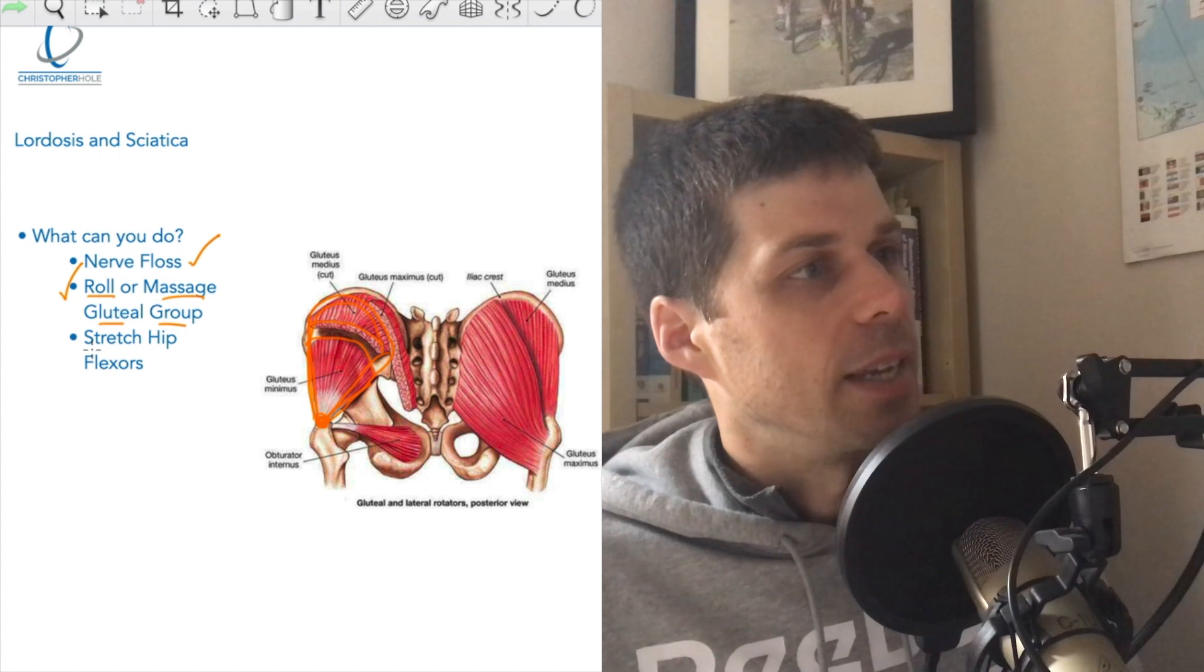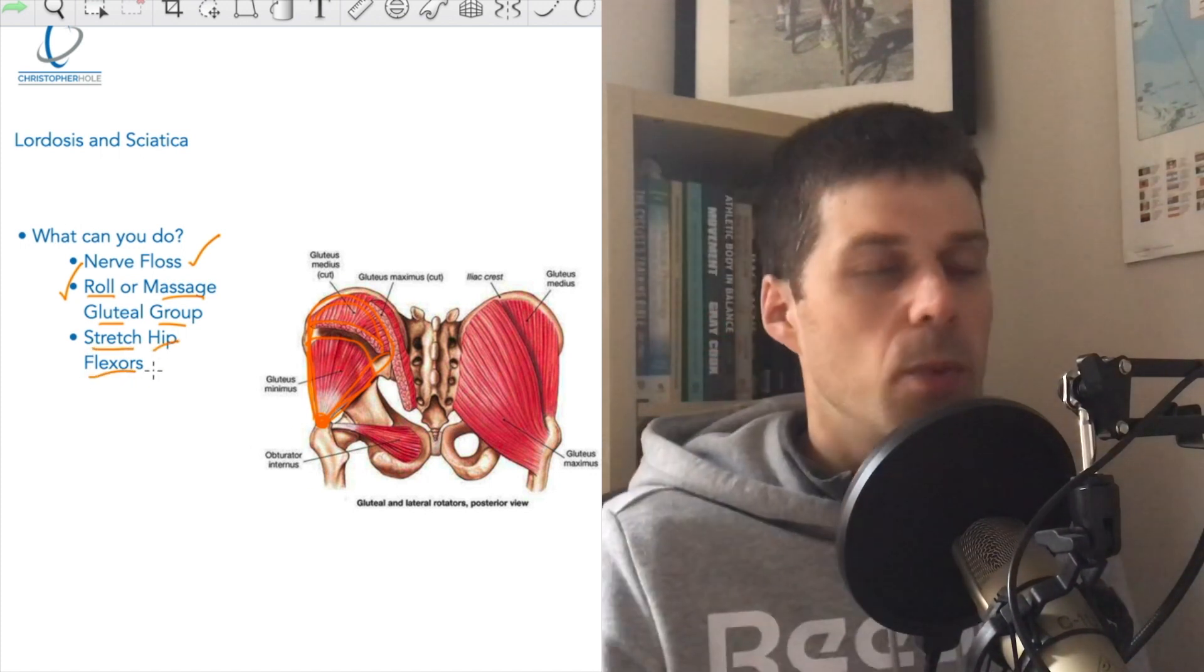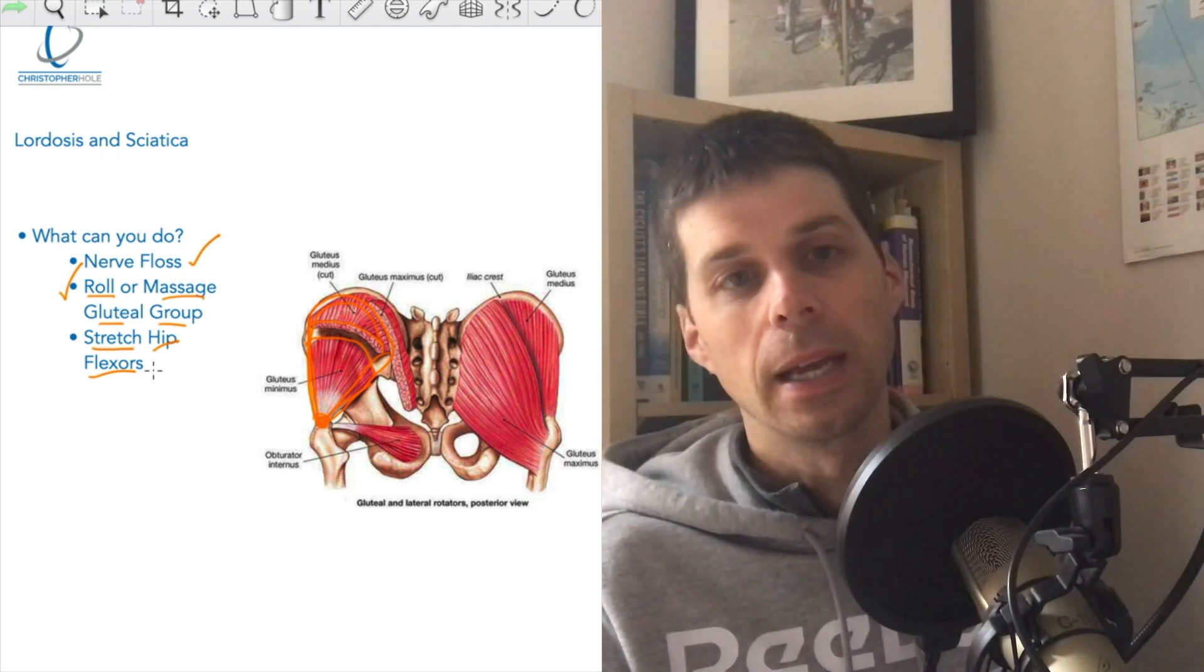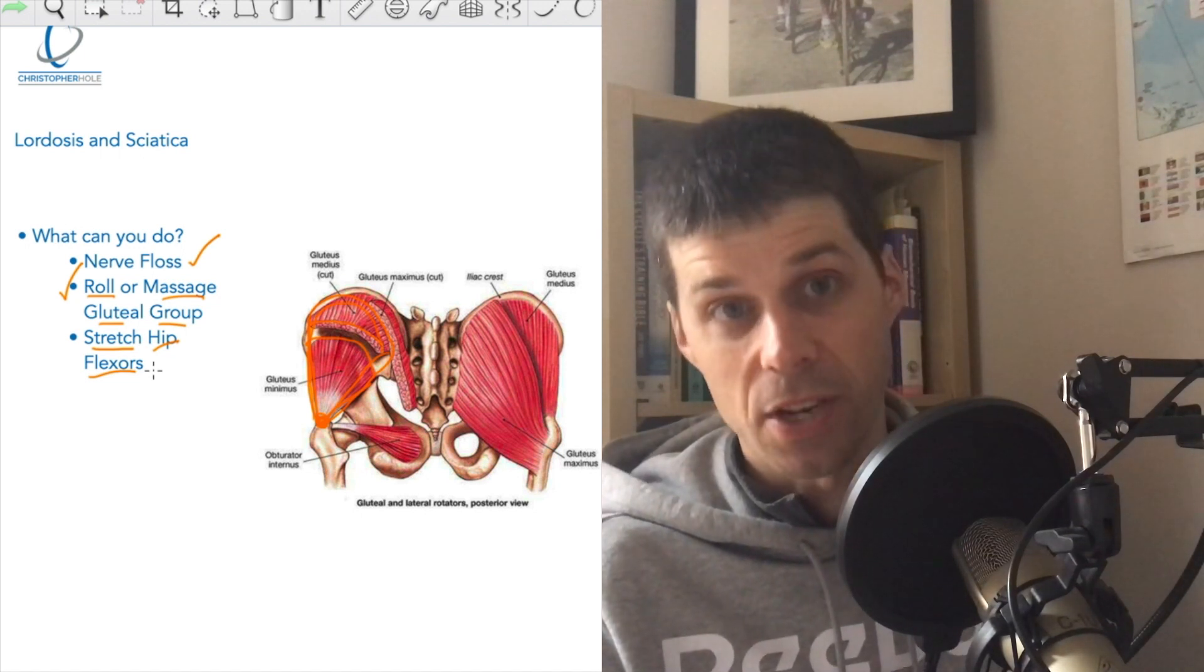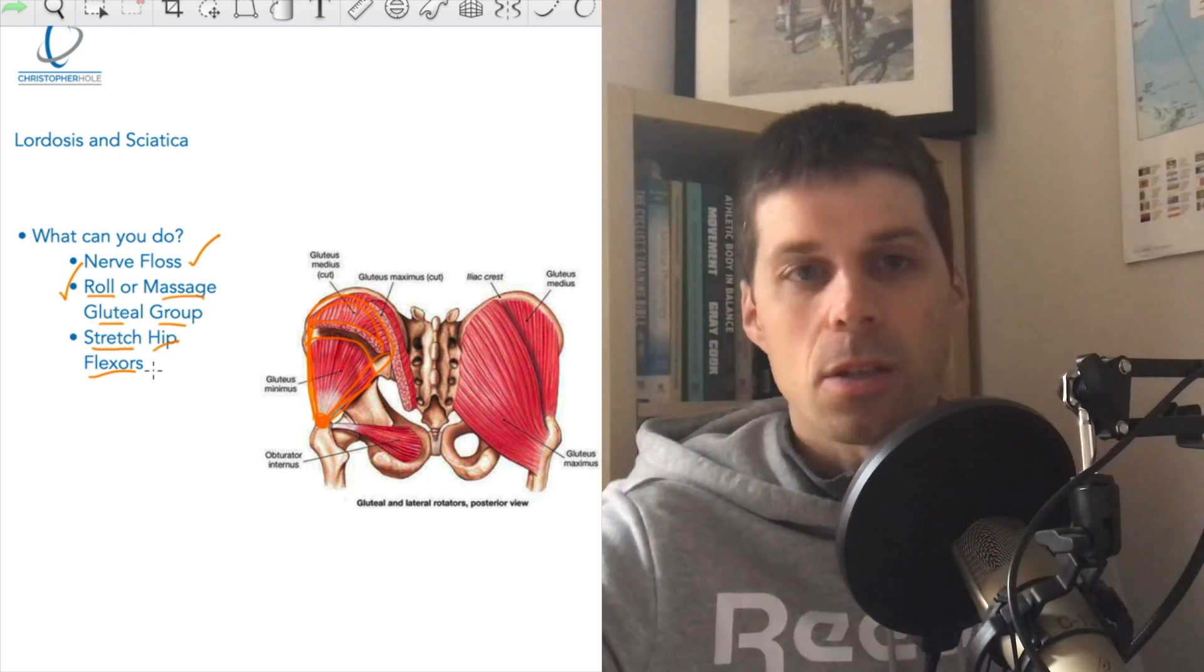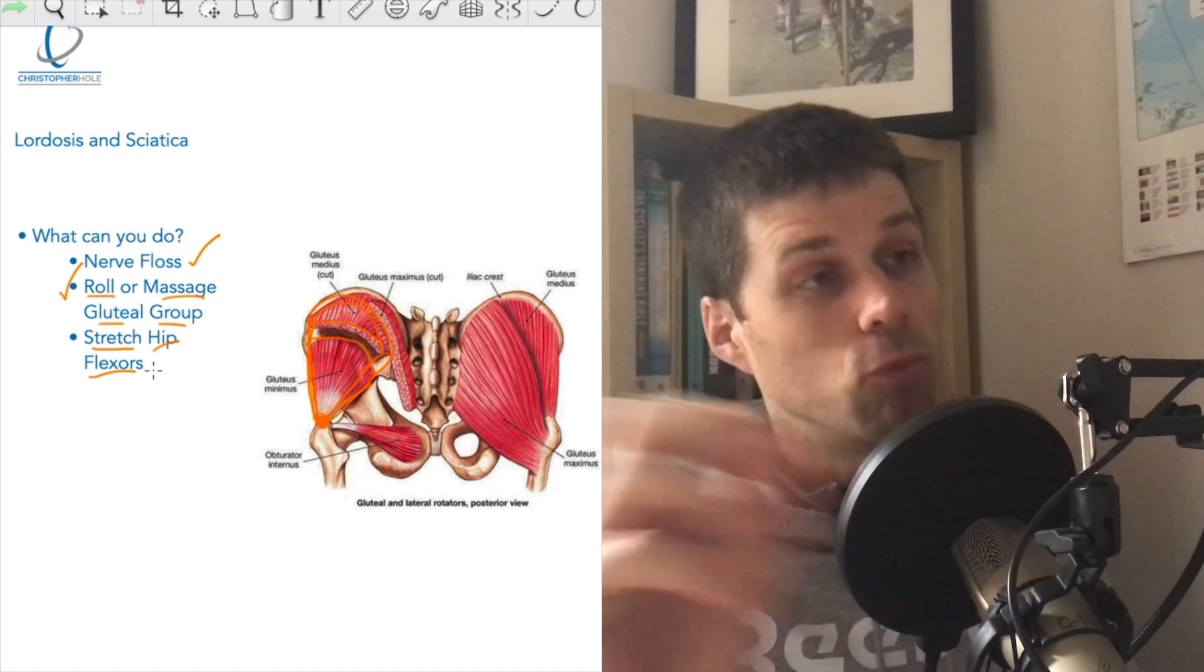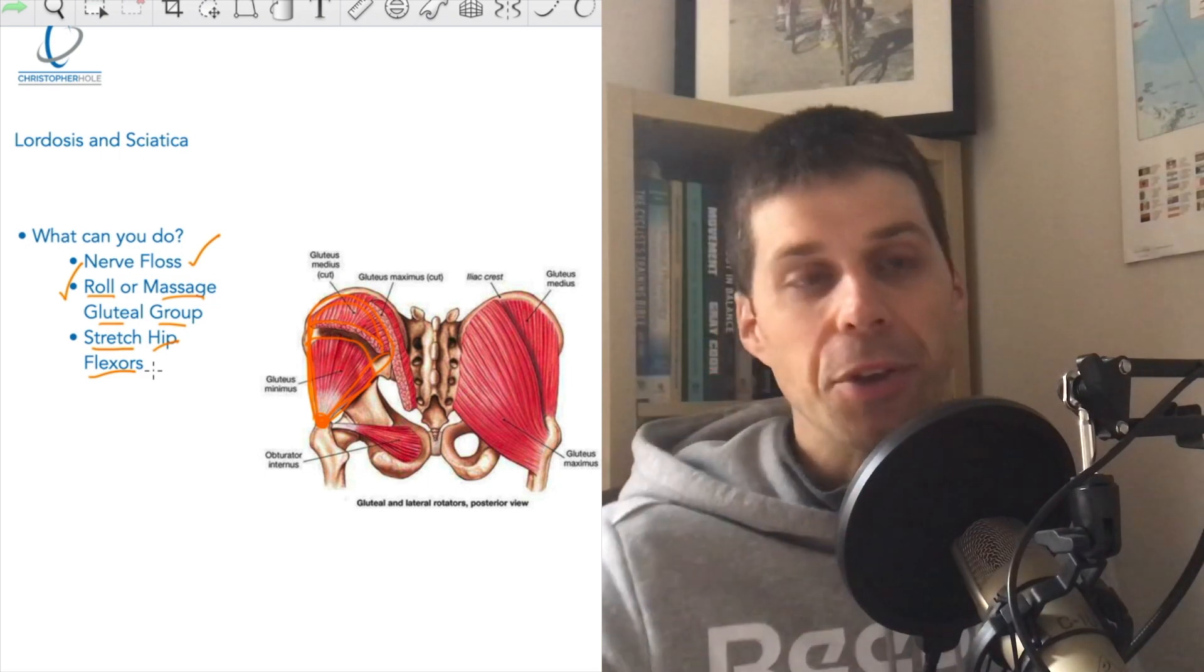And then finally, to start managing the lordosis, we would start to go about stretching the hip flexors: so psoas, rectus femoris, TFL as well, and potentially the adductors as well. So we would stretch all of that off. We're just trying to stretch the hip flexors to manage the lordosis, and then we're trying to roll or massage the gluteal group to calm down the nerve.